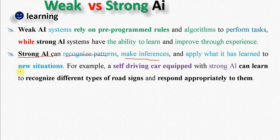For example, a self-driving car equipped with strong AI can learn to recognize different types of road signs and obstacles, and respond appropriately to them.